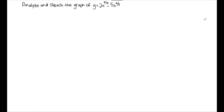We are going to analyze and sketch the graph of a polynomial function with fractional exponents using the first and the second derivative. When I start these problems, I always begin by finding my x and y intercepts. Finding the y intercept first, I set x equal to 0 and solve. In this case, I just get y equals 0, so I have the point (0, 0) as a y intercept.